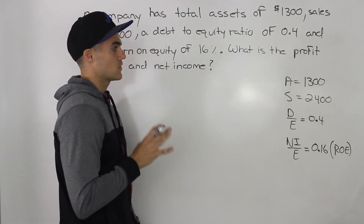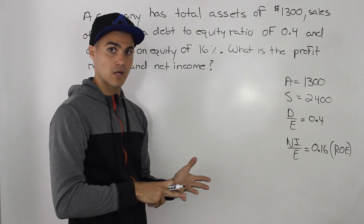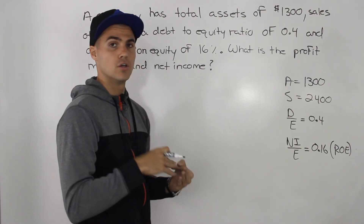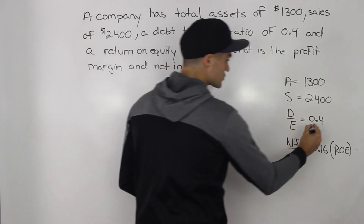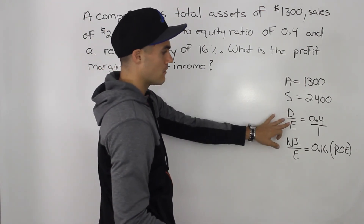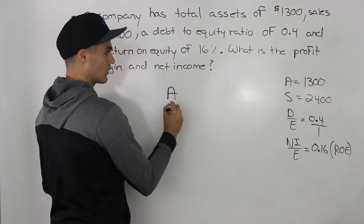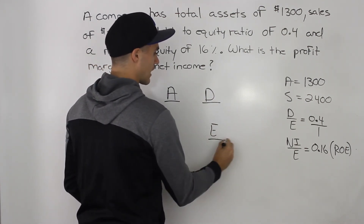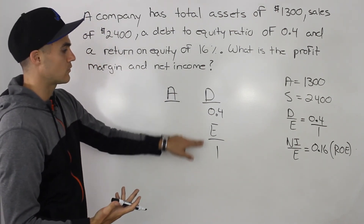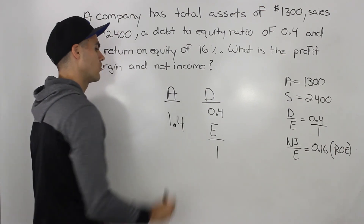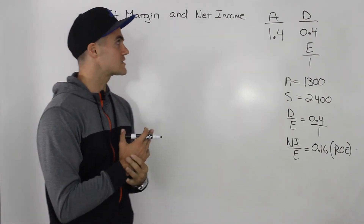Notice how in this question we are given the debt-to-equity ratio of 0.4. If you're given either the debt-to-equity ratio, equity multiplier, or total debt ratio, you always want to make a mini balance sheet. Debt-to-equity equals 0.4 — this is a single value, so we put it over 1. From this information we can make our mini balance sheet: assets, debt, and equity. The debt is 0.4, the equity is 1, so assets must be the sum: 0.4 plus 1 gives us 1.4.